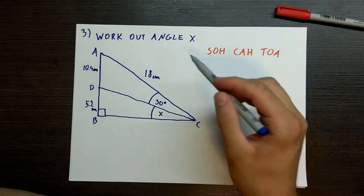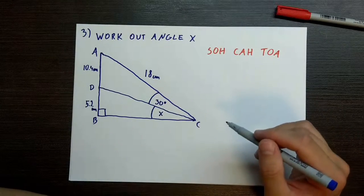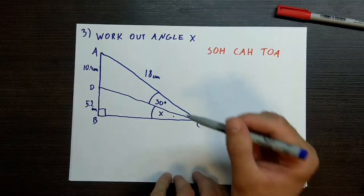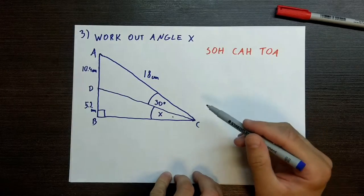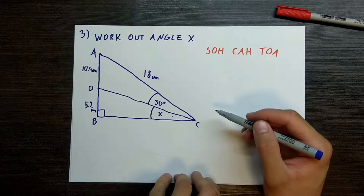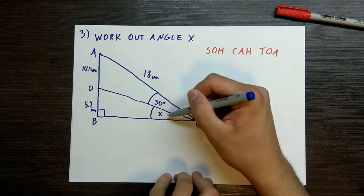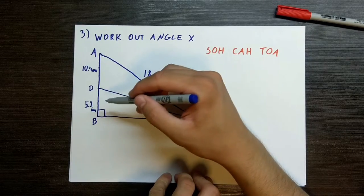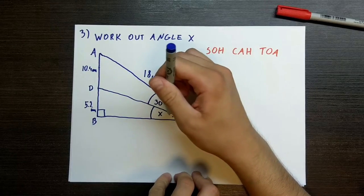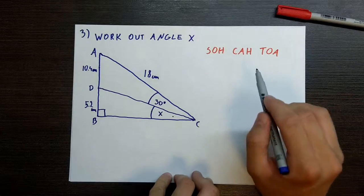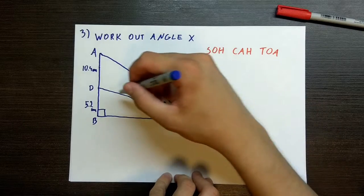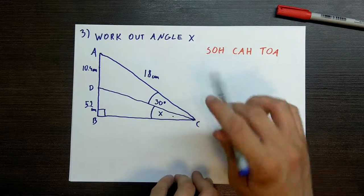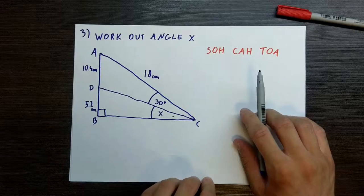We've got to figure out the third and hardest question we're going to do today. We need to work out angle x and we have this big triangle. What is our problem here? Well, to work out angle x we do not have two sides — we only know the opposite side. And we do not know the angle, so we cannot go straight to SOHCAHTOA. Also, this triangle is not a right angle triangle, so it doesn't give us much to work with.